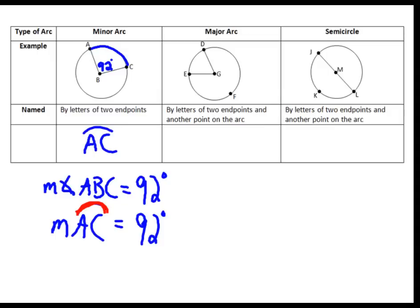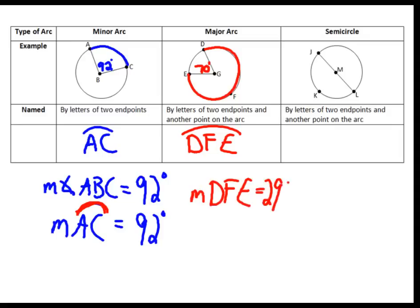A major arc is an arc that has a measure more than 180 degrees but less than 360 degrees. When naming a major arc, always use three letters. Arc DFE is a major arc — it's basically the long way around the circle. The measure of that major arc equals the measure of its central angle. So if the measure of angle DGE is 70 degrees, then the measure of arc DFE would be 290 degrees, because 360 minus 70 equals 290.